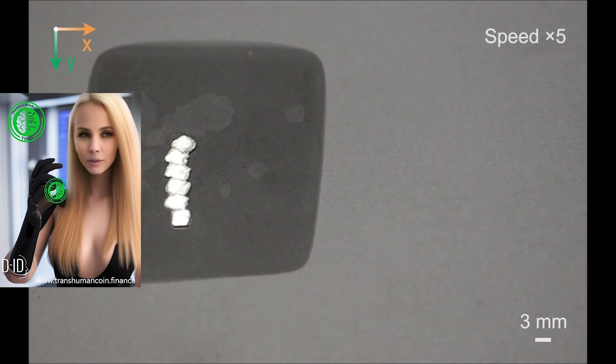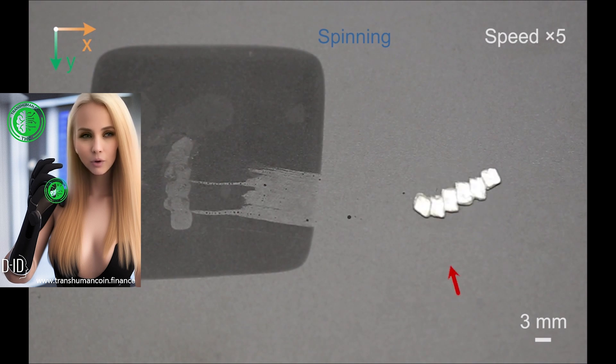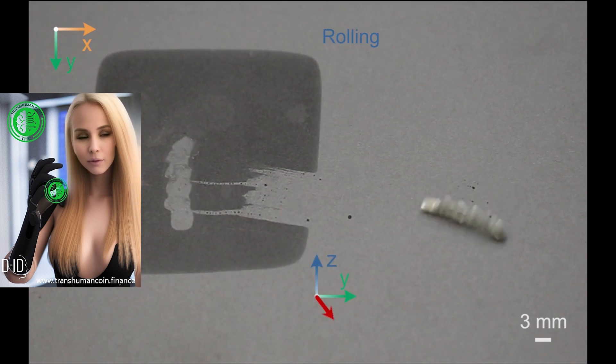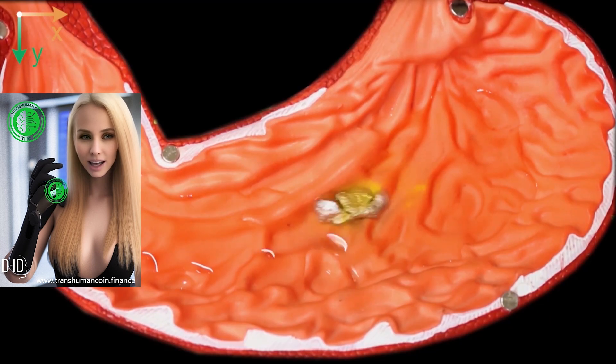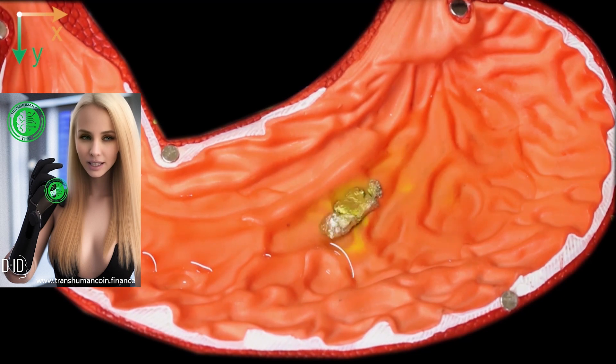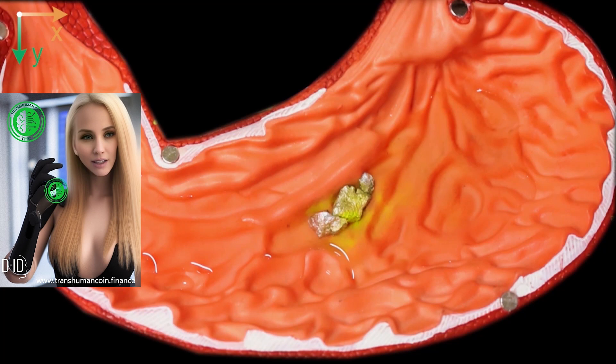They conducted a similar experiment inside an artificial stomach, exemplifying how these small robots could be used to, for example, remove objects in an instance where human or larger robot hands could not. In this example, they used magnets to guide the robot to a small object, melt over it, and then carry it out.